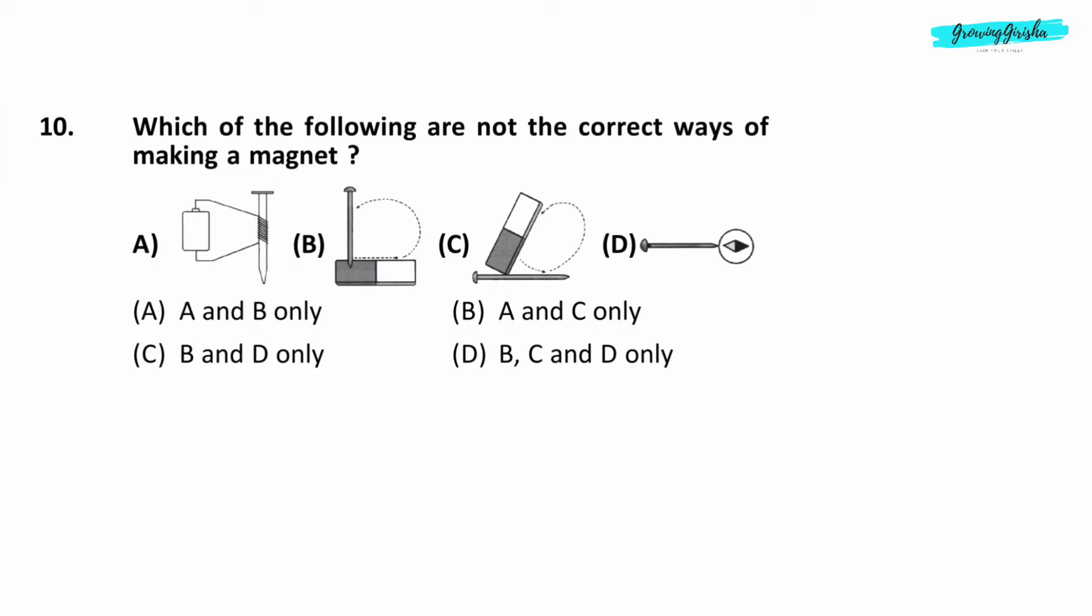Question 10. Which of the following are not the correct ways of making a magnet? Option C. B and D only.